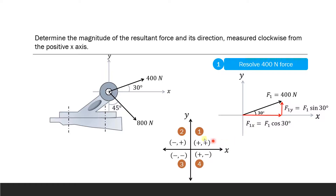Both components are in the first quadrant — F1x is along the positive x-axis and F1y is along the positive y-axis. In the first quadrant x is positive and y is positive; in the second quadrant x is negative and y is positive; in the third quadrant both are negative; in the fourth quadrant x is positive and y is negative. Since F1 lies in the first quadrant, F1x and F1y are both positive.